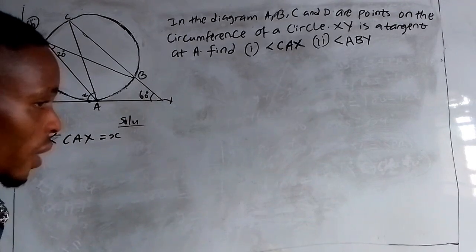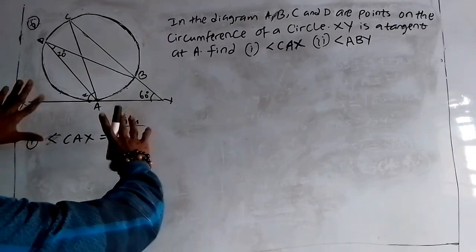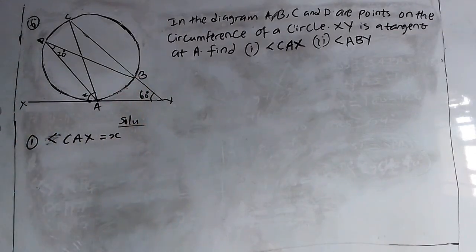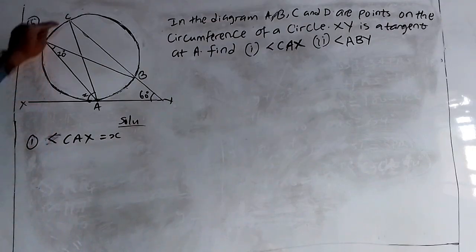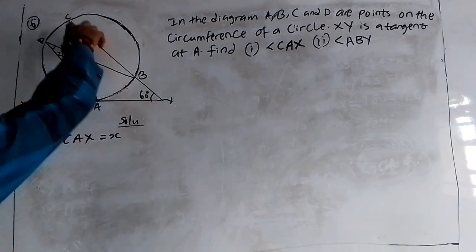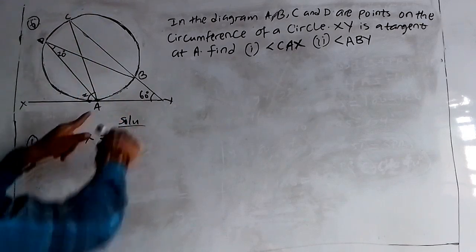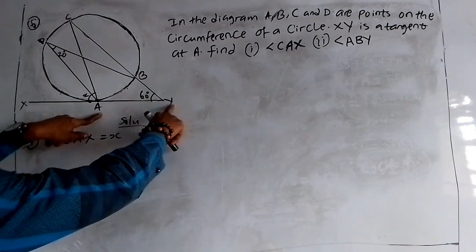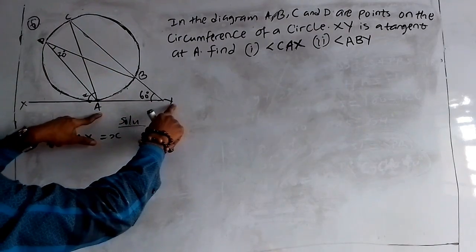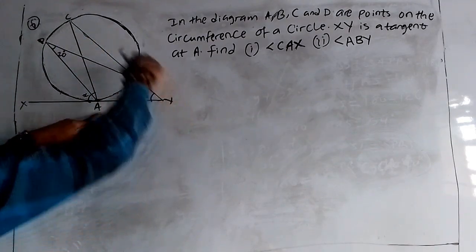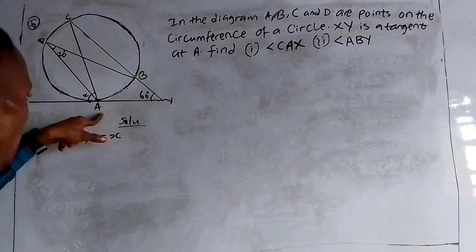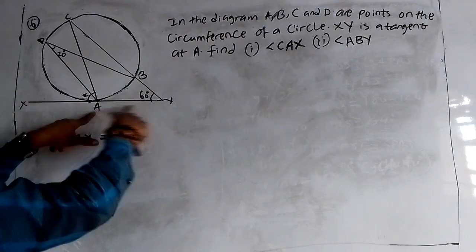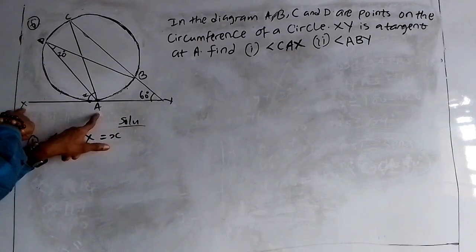So let's start by drawing the line ABY on the diagram. After you draw ABY, angle CAS — if you look at it through point Y — we have CAY going back to CAS, and it gives us a triangle.